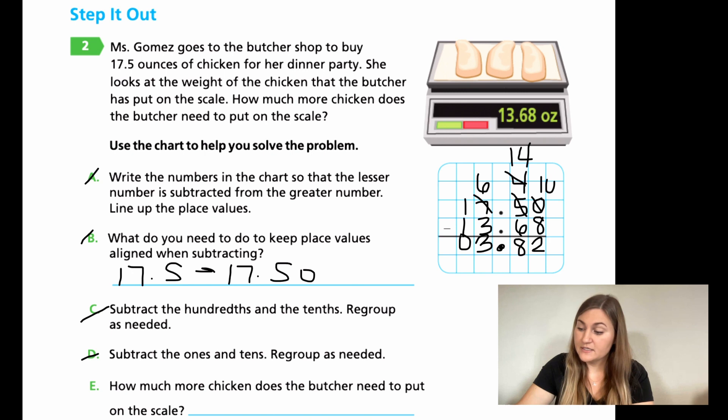So for E, how much more chicken does the butcher need to put on the scale? The butcher needs to put 3.82, and our problem was in ounces, as it says up here and right here. So OZ is going to be the shortcut for ounces.